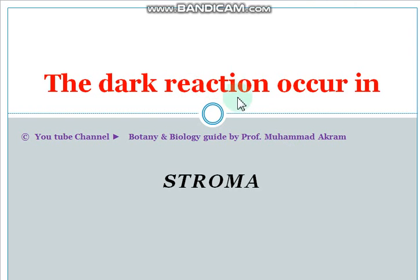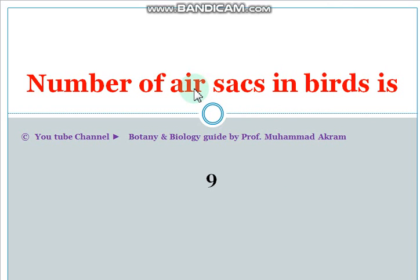The dark reaction of photosynthesis occurs in the stroma. The number of air sacs in a bird is 9.